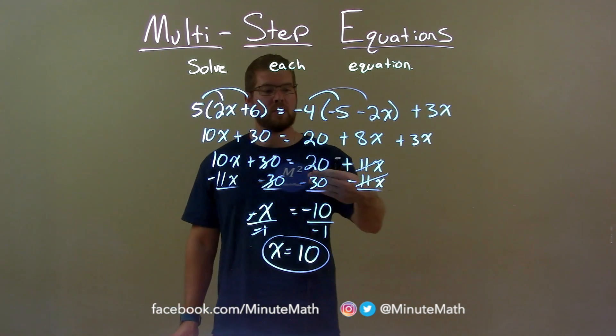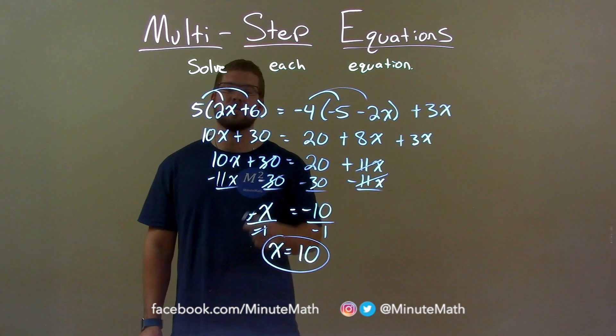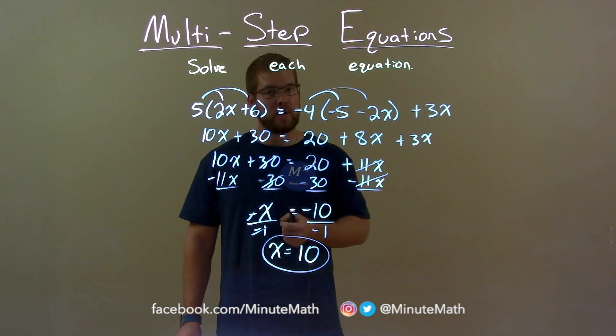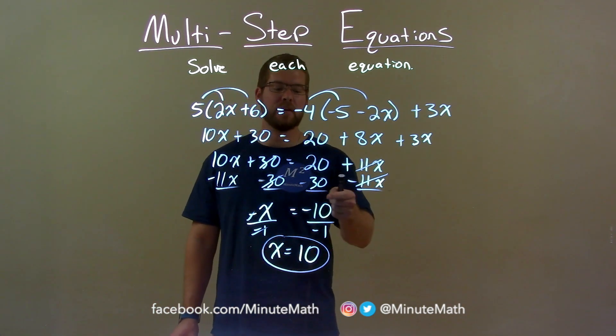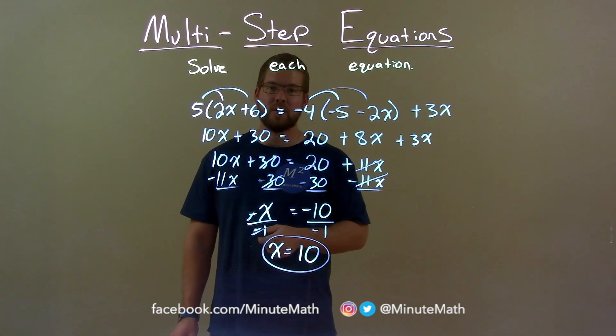Brought my variables to the left, numbers to the right, and got negative x equals negative 10. Divided both sides by negative 1, giving me x by itself equal to negative divided by negative is a positive, a positive 10.